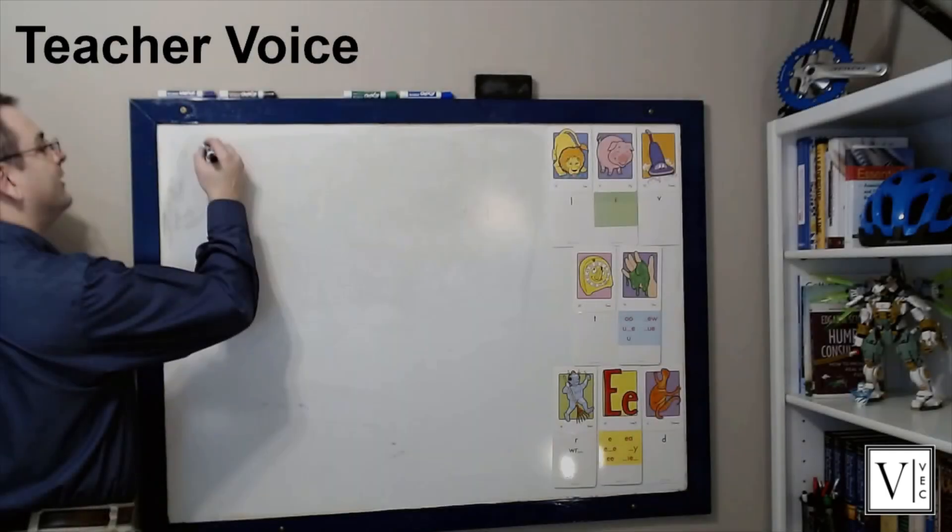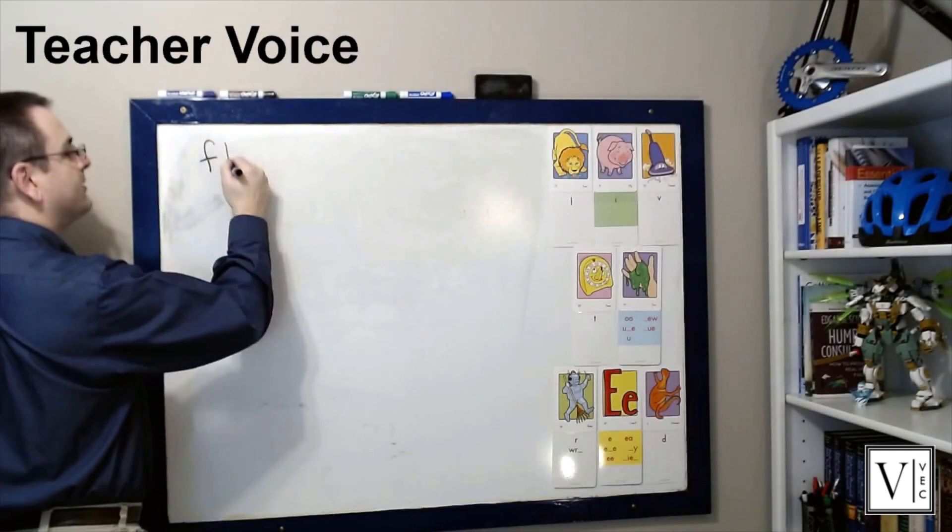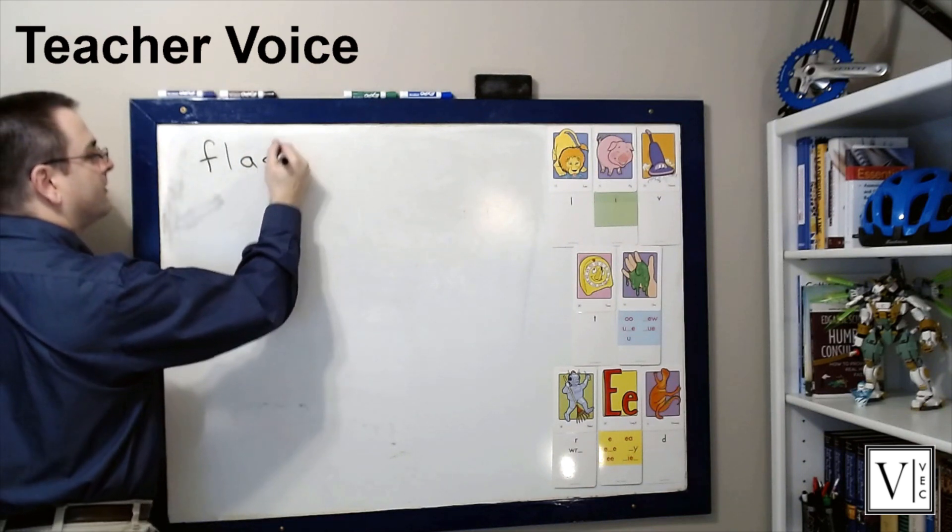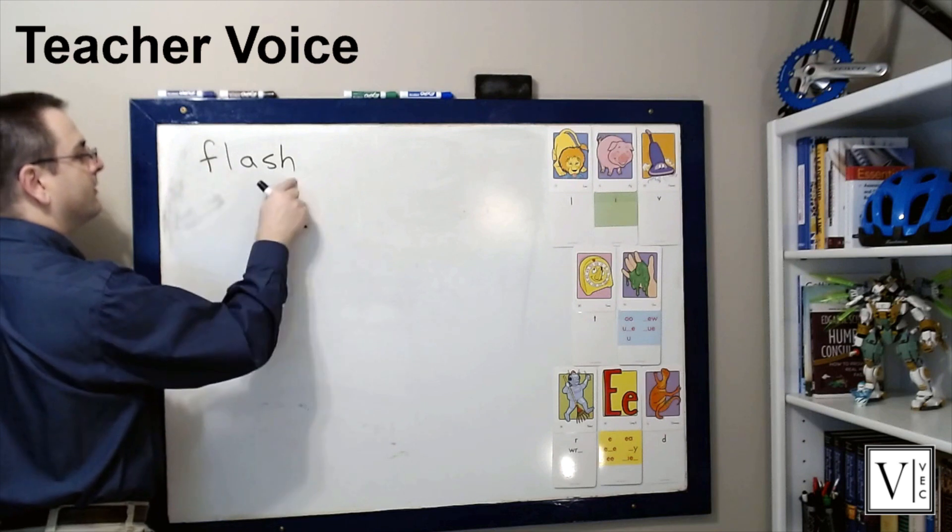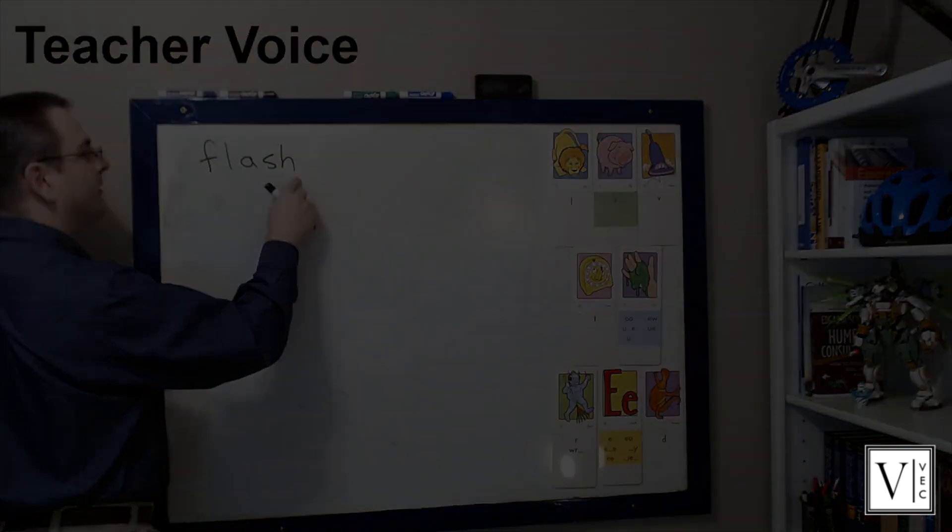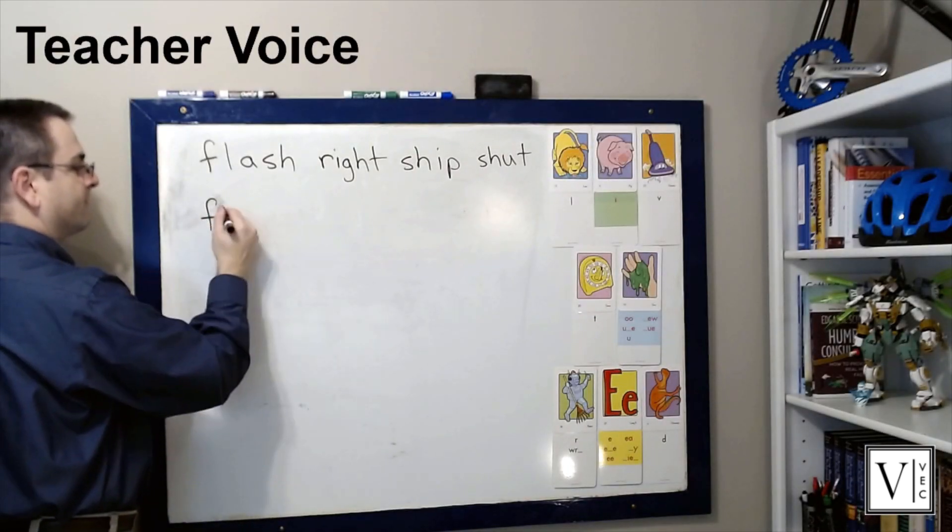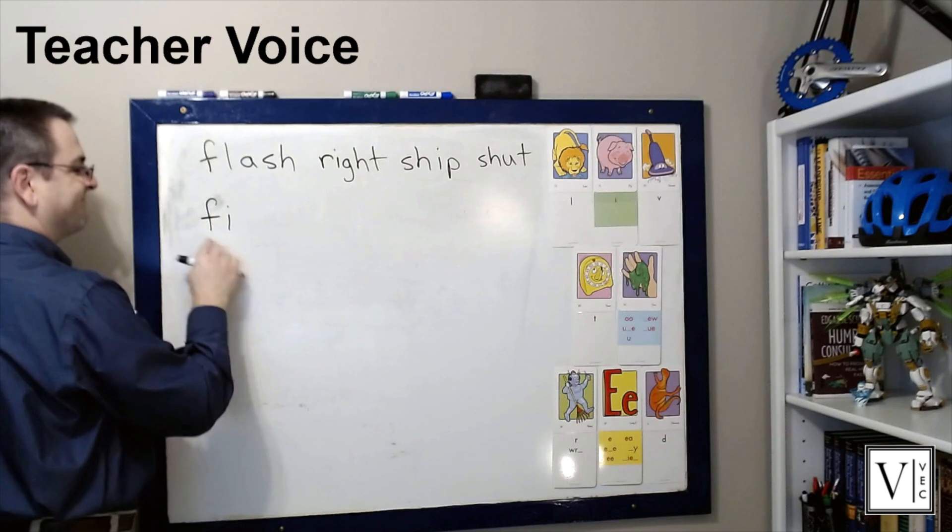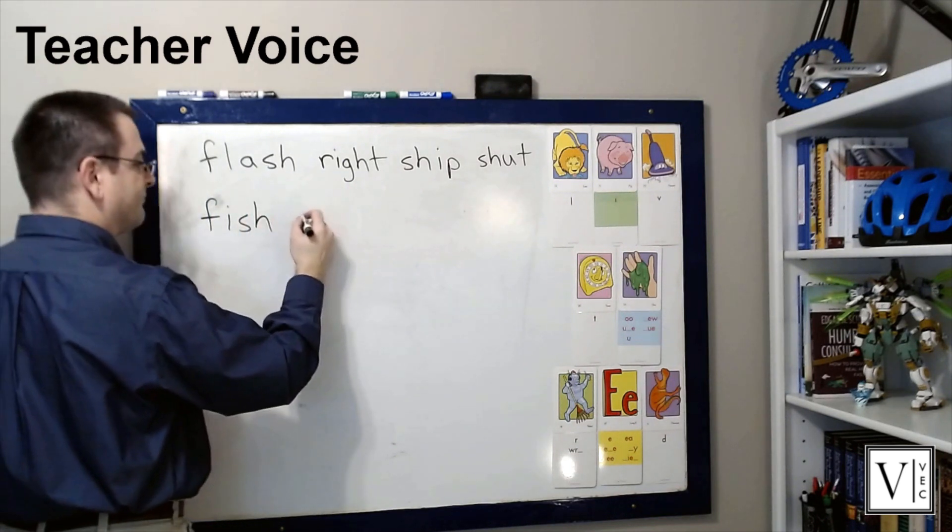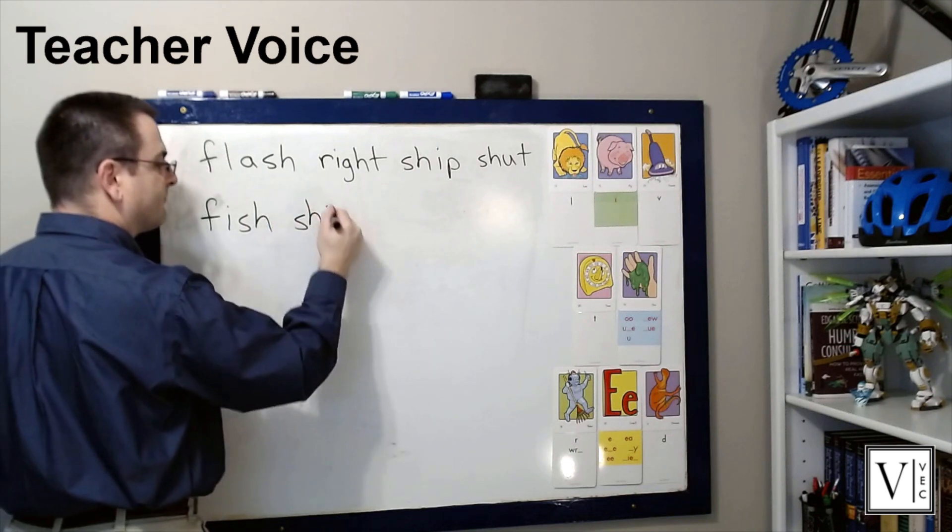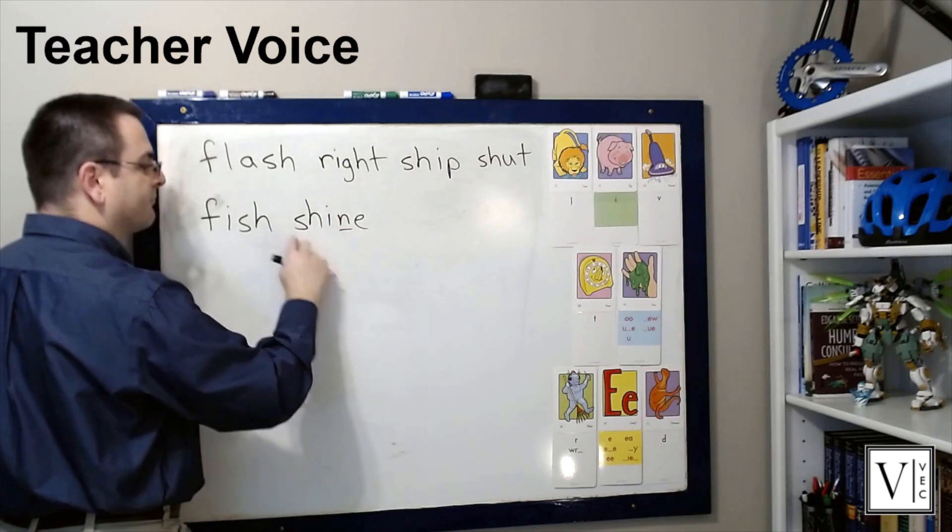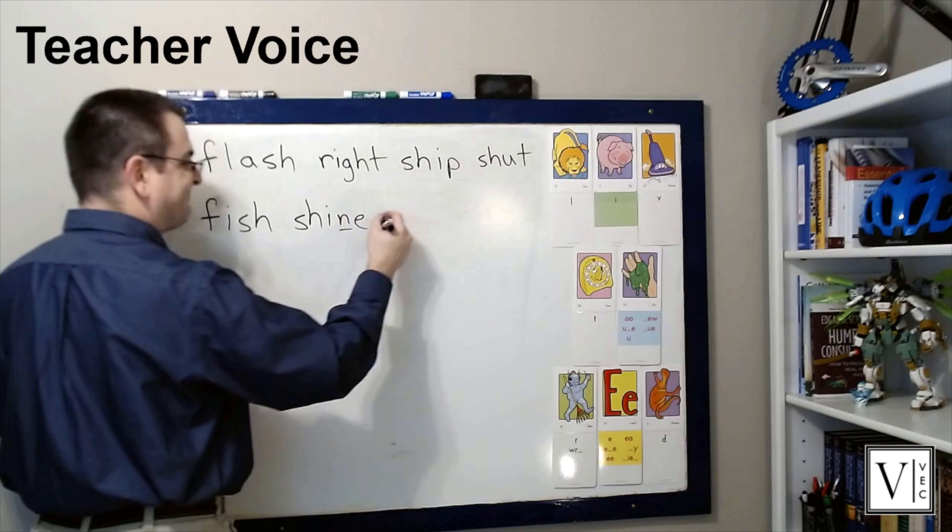When students are first learning the routine you'll want to use verbal cues and say 'sound' every time you point to a grapheme. But as students get better at understanding the routine you'll eventually want to drop your verbal cues off. You'll notice on the second line that I drop my verbal cue so that the student can just pay attention to the visual cue of where I point my finger. This enables the student to really focus on the sounds rather than getting distracted by my voice.